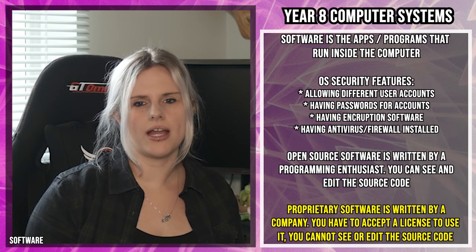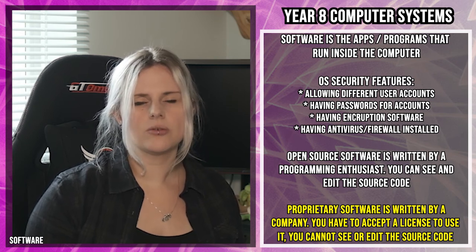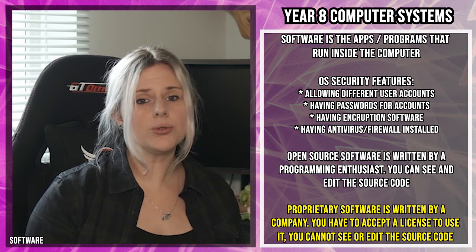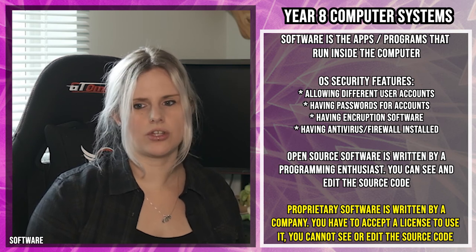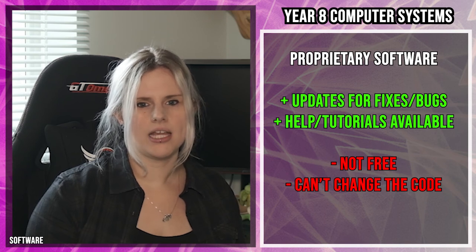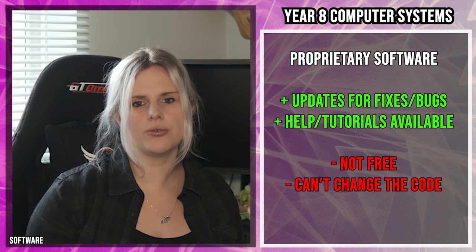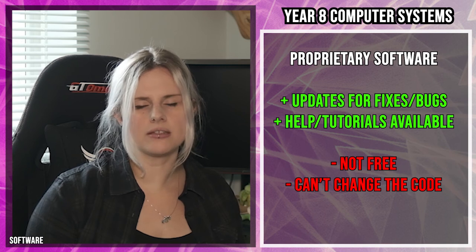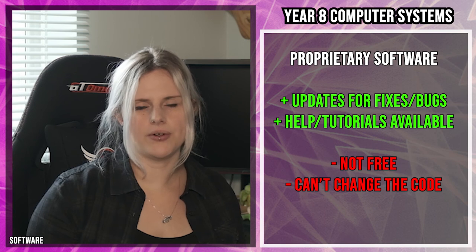The alternative is proprietary software, which is written by a company. To use it you must accept the licence, and you usually have to pay a fee to buy or install it. You cannot see or edit the source code. The advantages are that companies provide help, tutorials and updates so any bugs will be fixed, though updates may have a small cost. The biggest disadvantage is that you have to pay for it.